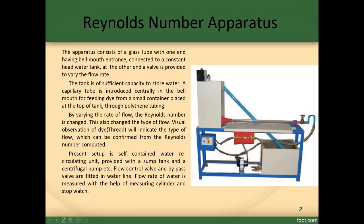The Reynolds number apparatus — as shown in the figure — consists of a glass tube with one end having a bell mount entrance, connected to a constant head water tank. At the other end, a valve is provided to vary the flow rate.